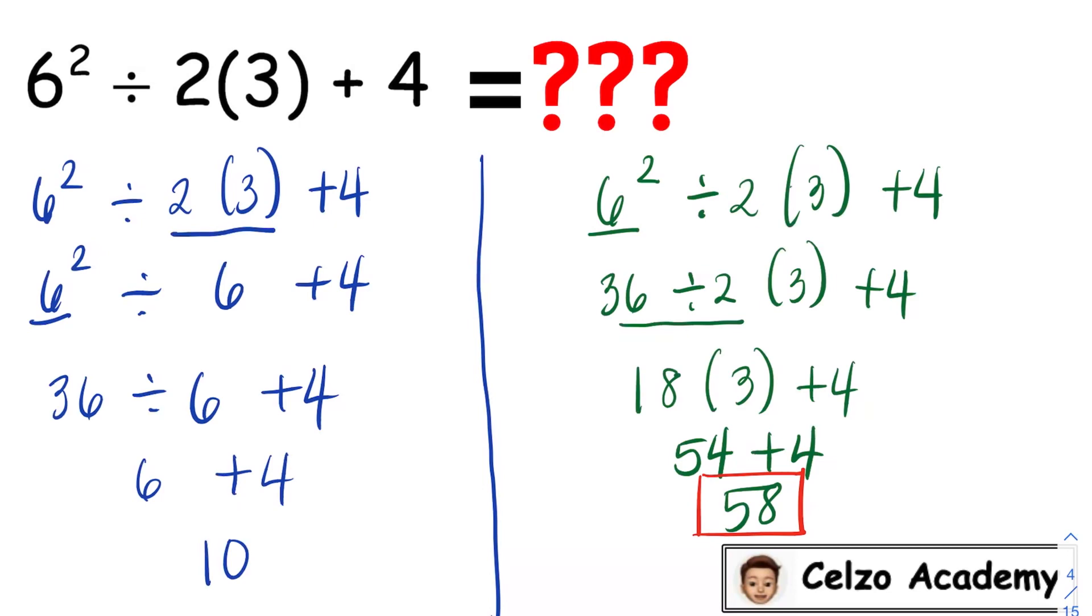So this means that we need to simplify first the exponents, and then we follow the remaining order of operations.